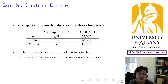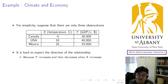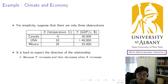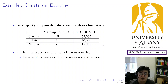Canada's average temperature is minus five degrees Celsius, USA is 10 degrees, and Mexico 25 degrees. GDP per capita in dollars is 35,000, 40,000, and 15,000. I simplified all the numbers, and we are going to calculate the covariance using only three observations.